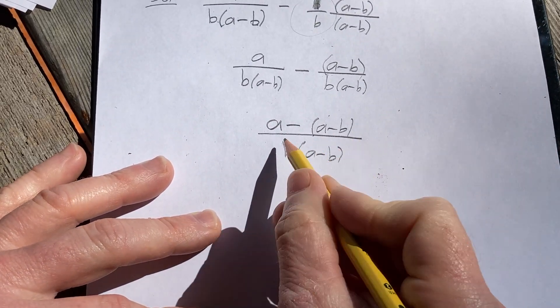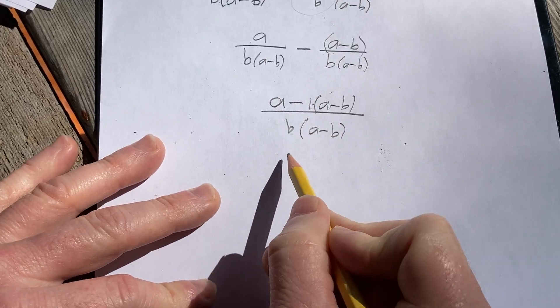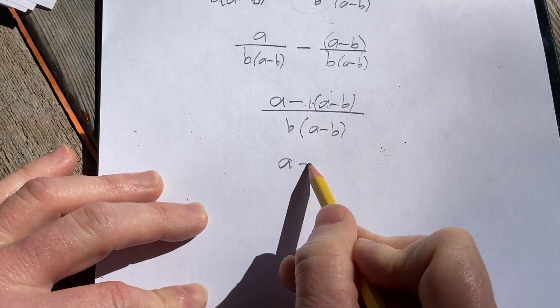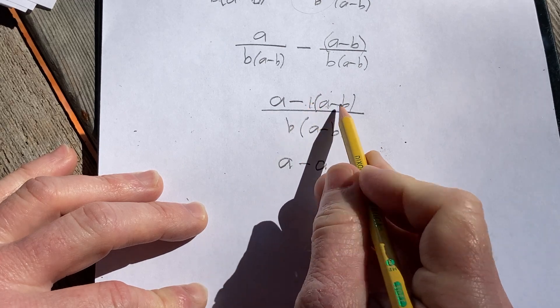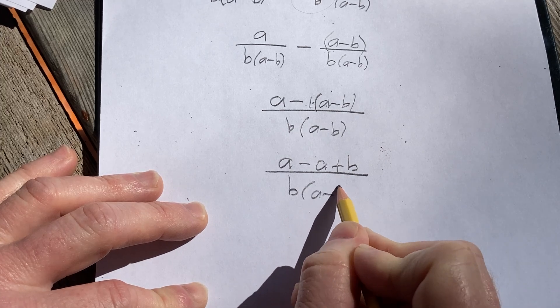Okay, and then now we can actually perform subtraction here. There is a 1 here, so we distribute that. That's going to give us a, negative 1 times a is minus a, and then negative 1 times negative b is going to be a plus b, over b times parentheses a minus b.